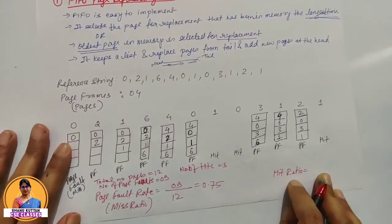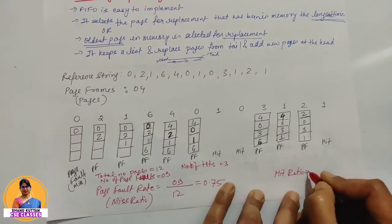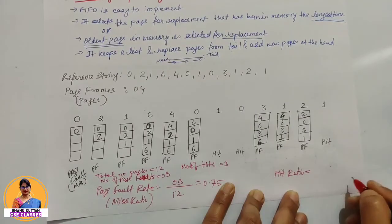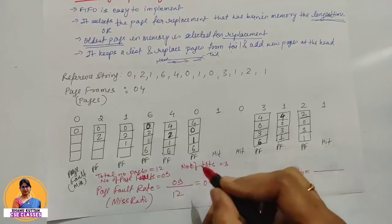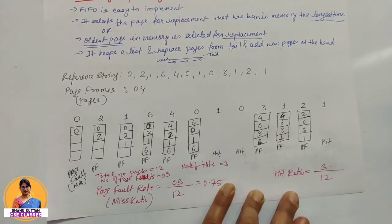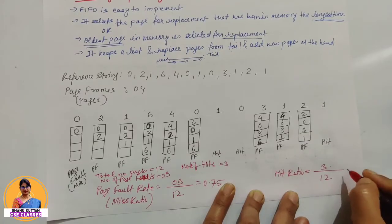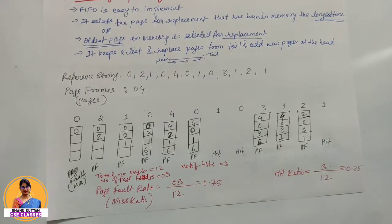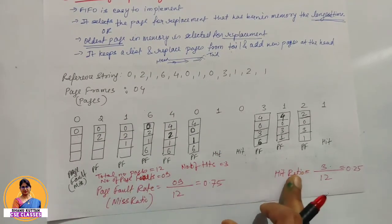Now if we ask the hit ratio, it is number of hits divided by total number of hits plus misses. Total number of hits is 1, 2, 3. So 3 divided by total number of pages 12, this is 3 by 12 that is 0.25. So in this way either it will ask page fault rate or it will ask the hit ratio.